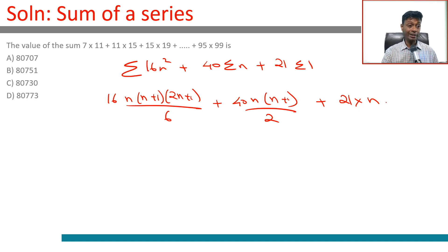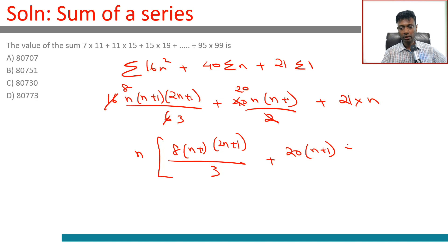All these numbers seem to be adjacent to each other. We can carve out n from this and say which of these is a multiple of 23. 16 by 6 is 8 by 3, this is 20. Simplifying, we can get n out: 8 into n plus 1 into 2n plus 1 by 3, plus 20 times n plus 1, plus 21.